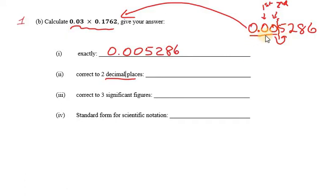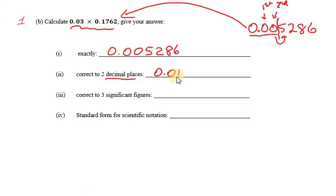So it's not going to be 0.00. It's going to be 0.01 — because we add 1 to this digit. Why? Because the very next digit is 5 or more. This answer 0.01 has two decimal places. How do we know? Because after the point, we have two digits.